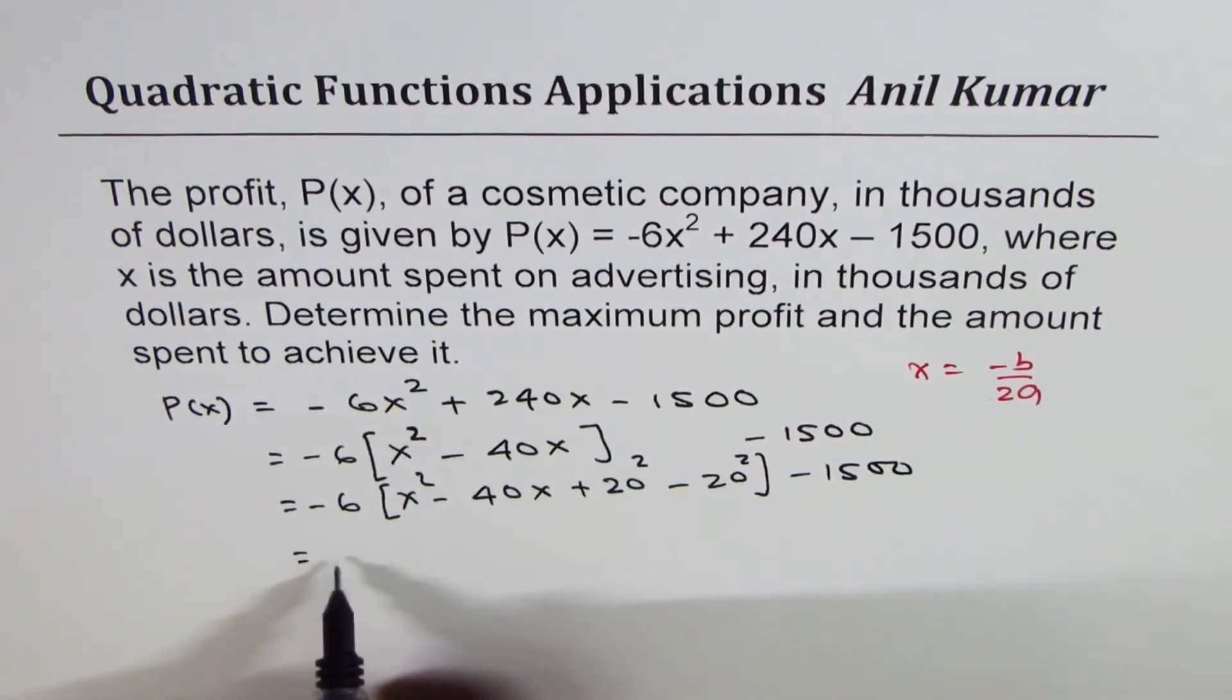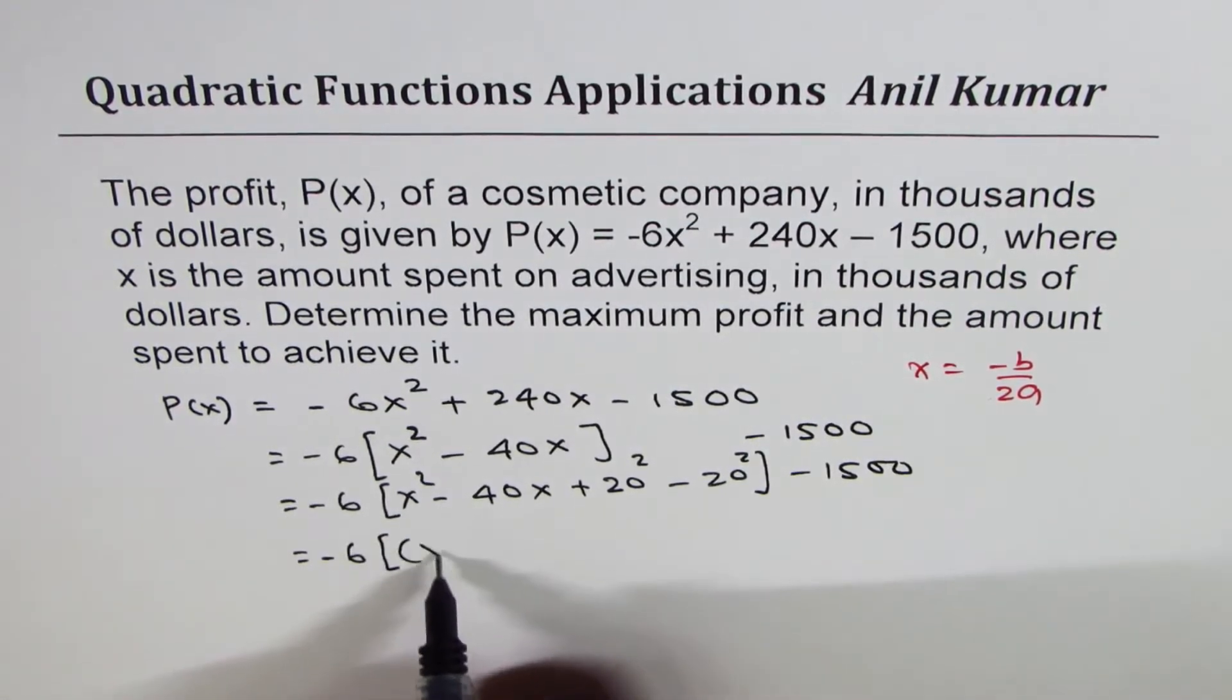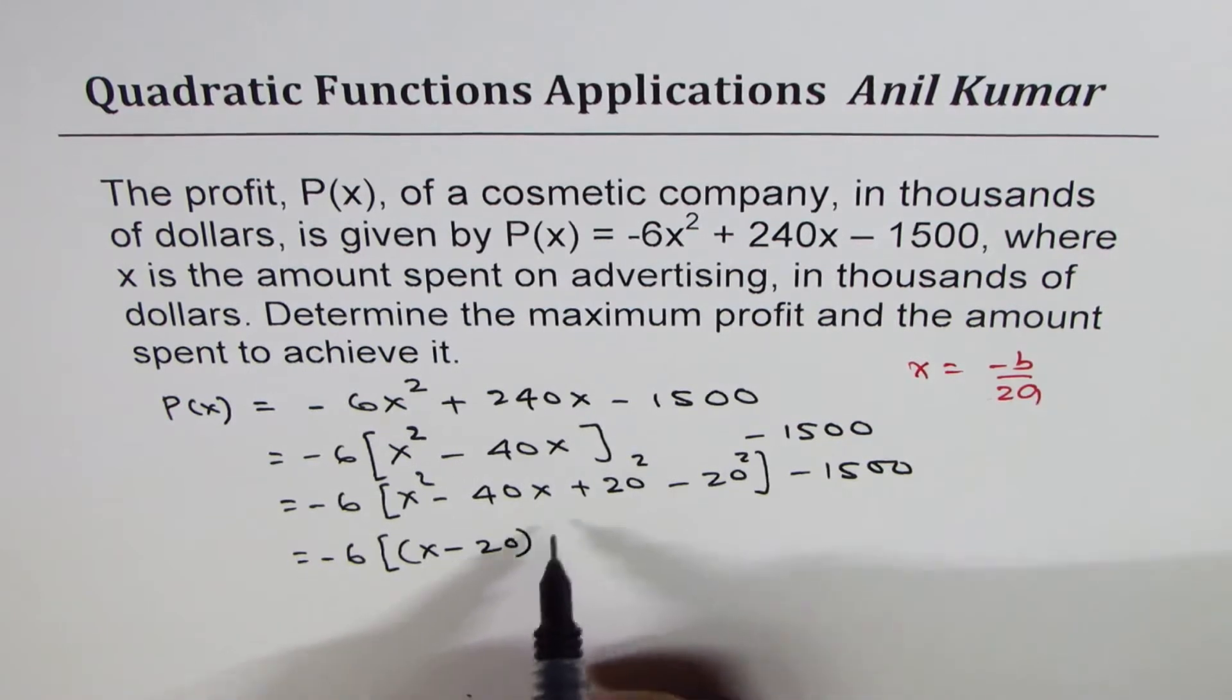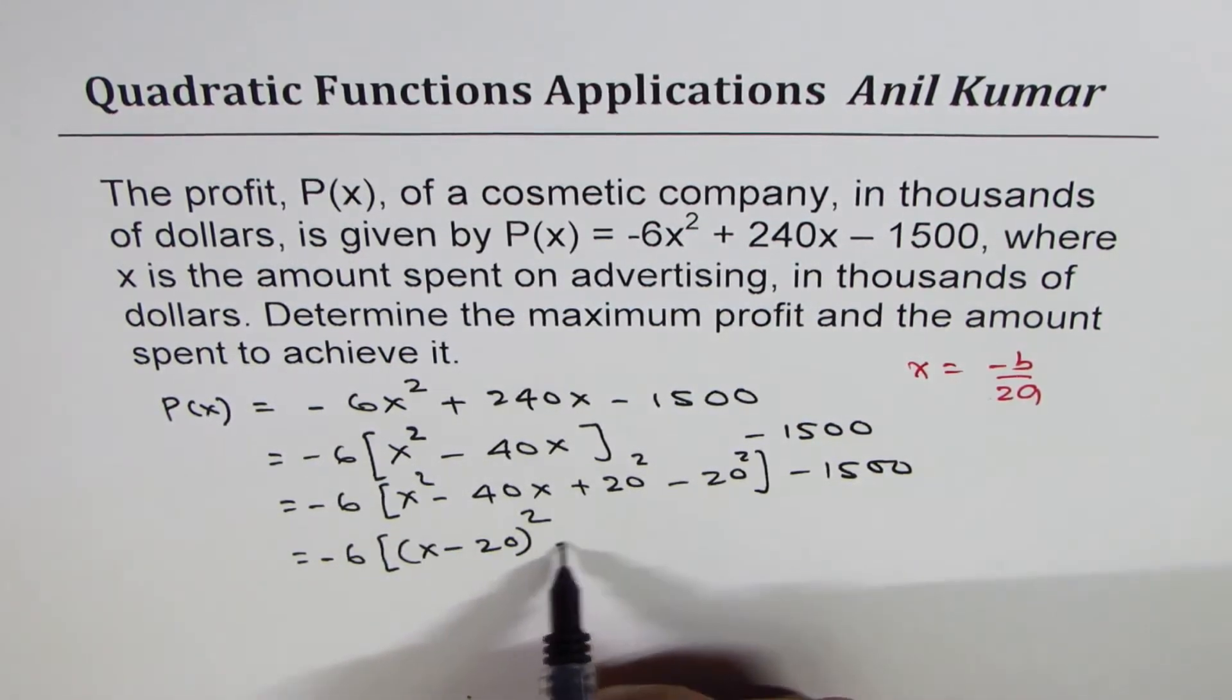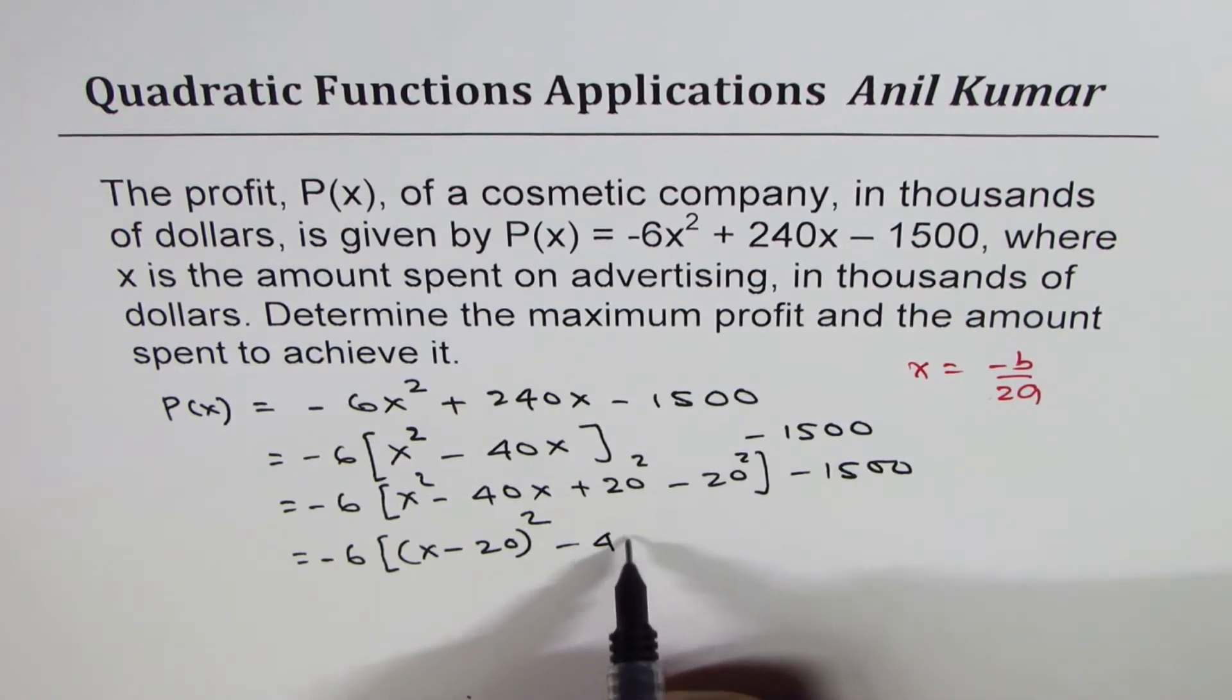First three terms form perfect square. So we write them as (x - 20)². Minus comes from there, 20 from here. We are left with -20² which is -400.